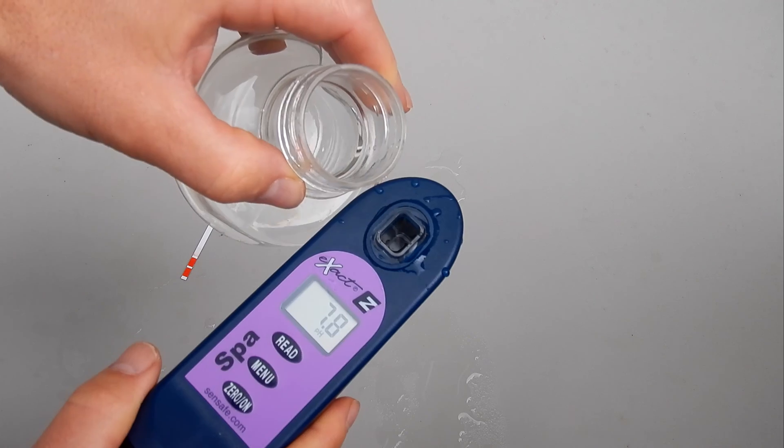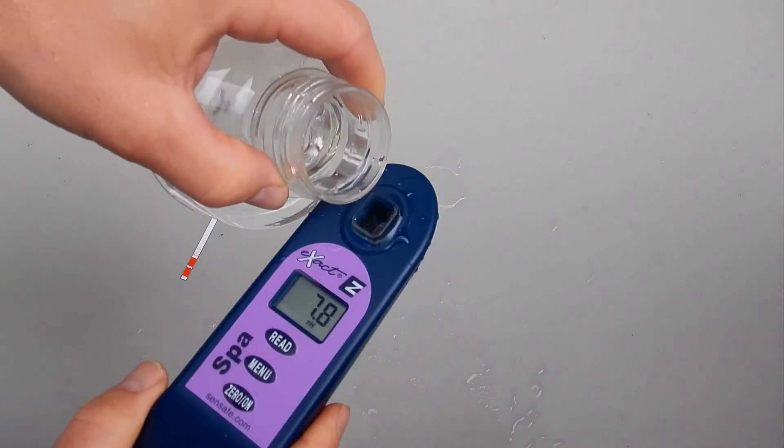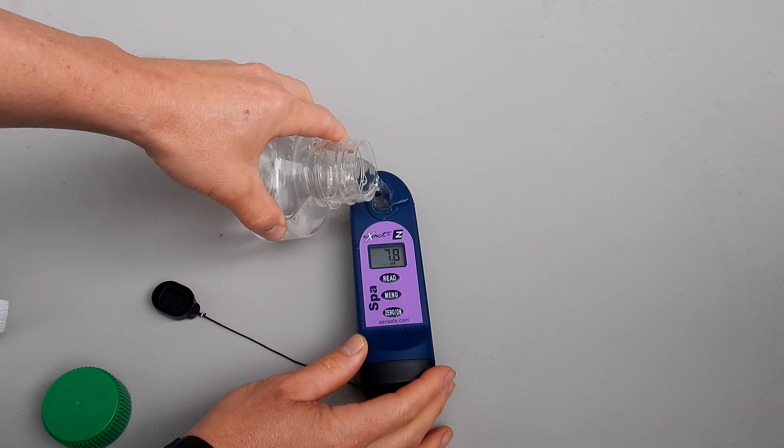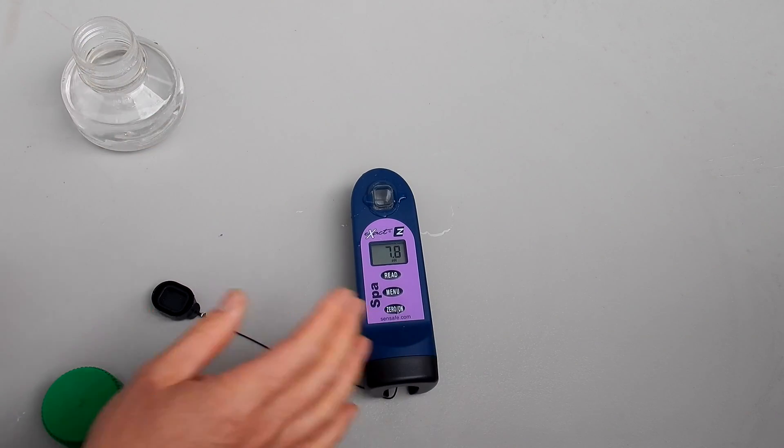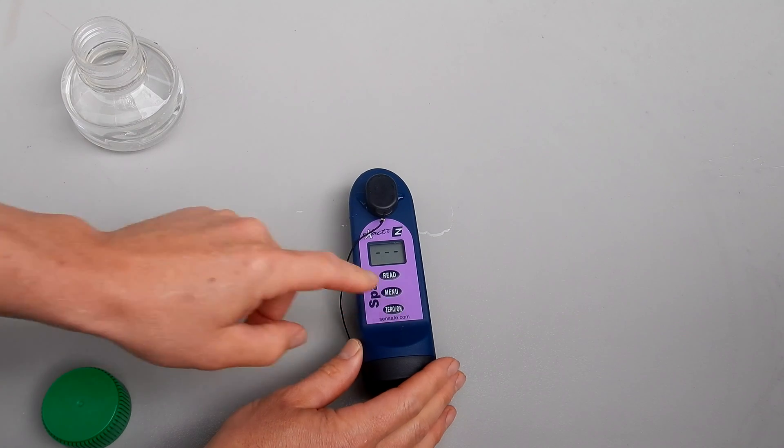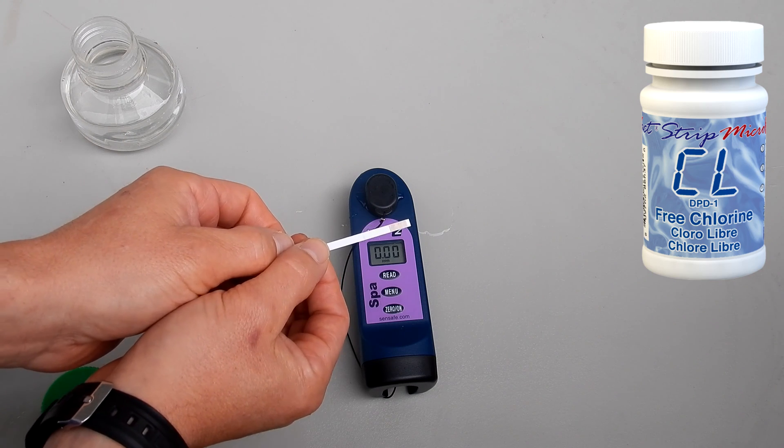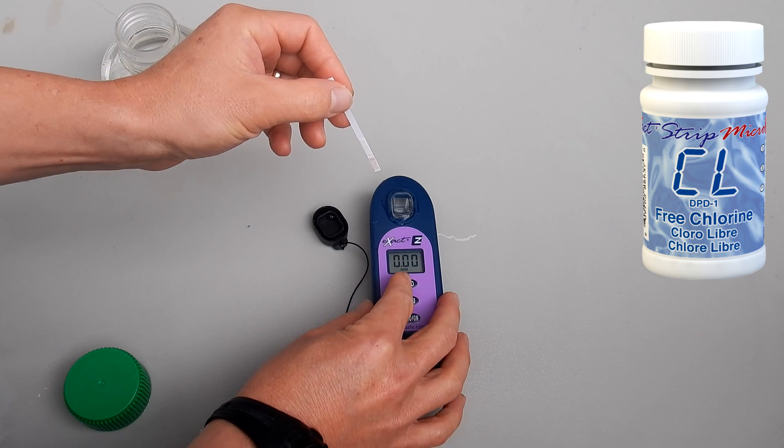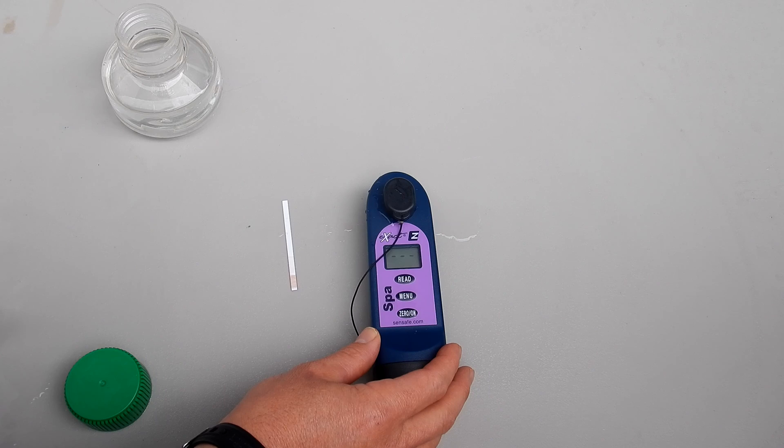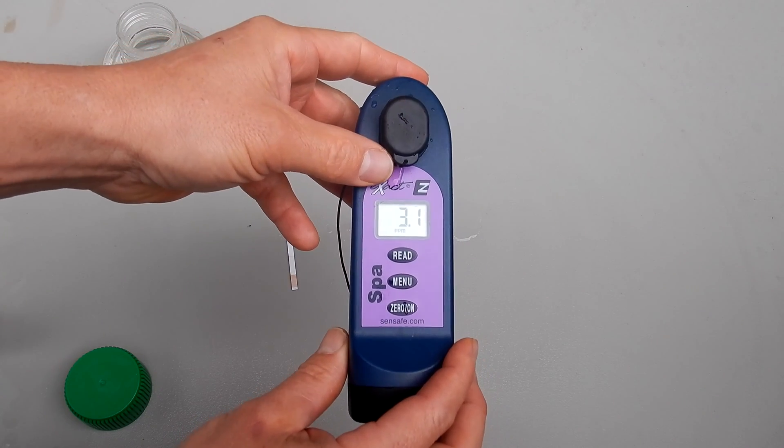Again you want to rinse the chamber out thoroughly in between testing. You go ahead and use the included brush to scrub it out. Let me go ahead and do the free and combine chlorine test here for you. Let me zero it out. You'll use the CL-DPT-1 test strip. You want to hit the read button. I'm going to move the strip back and forth inside the chamber. The chlorine is coming in at 3.1 parts per million.